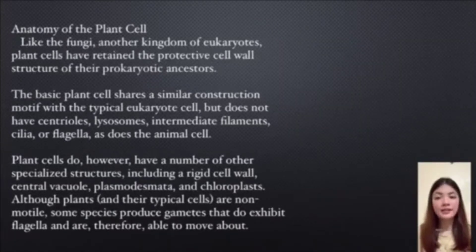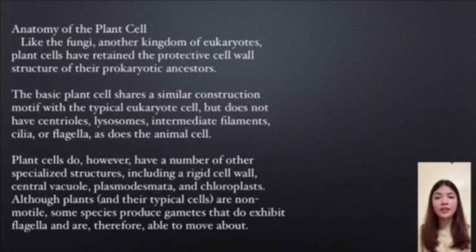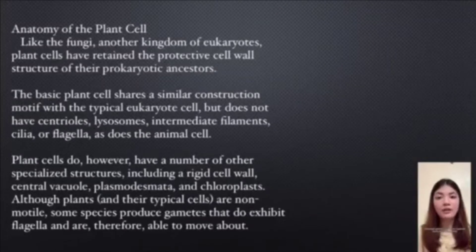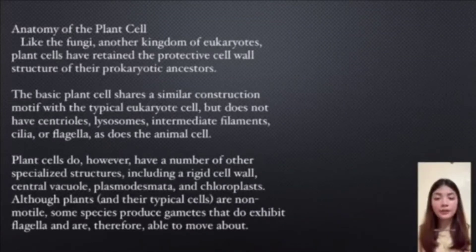Plant cells do, however, have a number of specialized structures, including a rigid cell wall, central vacuole, plasmodesmata, and chloroplast. Although plants and their typical cells are non-motile, some species produce gametes that do exhibit flagella and are, therefore, able to move about.